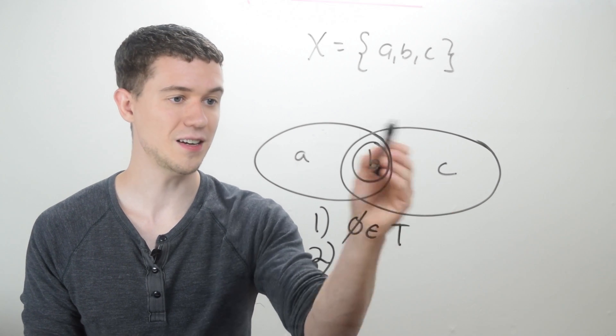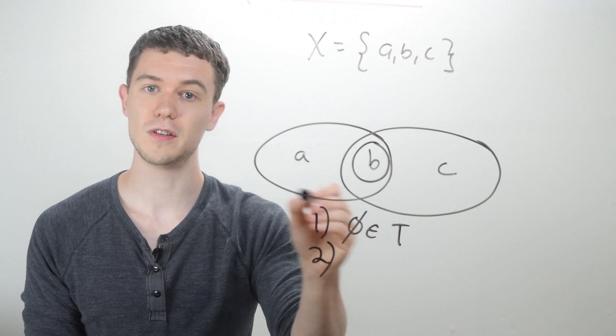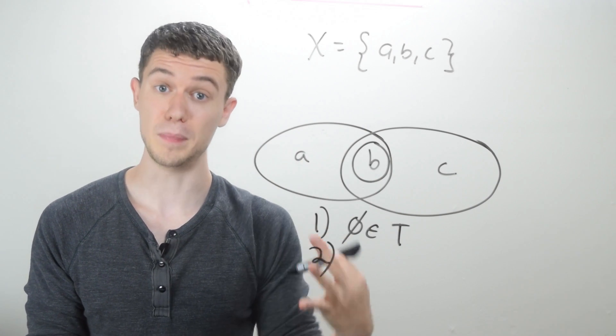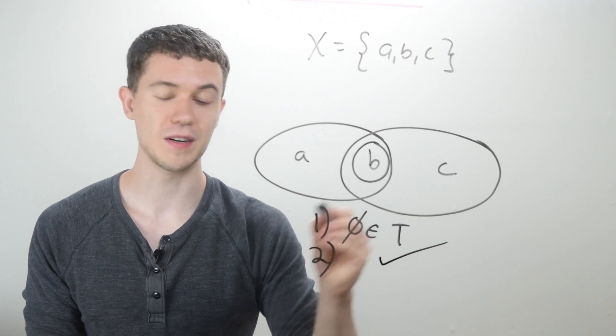Is there a circle around B? Yes, there is, right? So the intersection of the circle containing BC, the intersection of the circle containing AB is B. And there's a circle around B. So the second criterion holds.